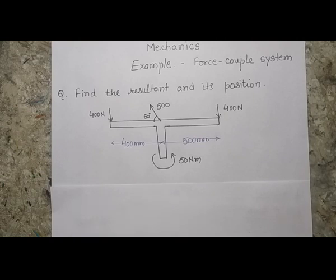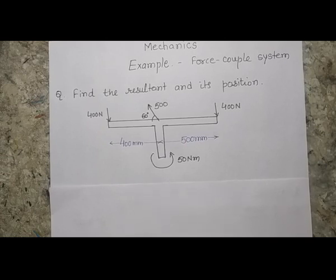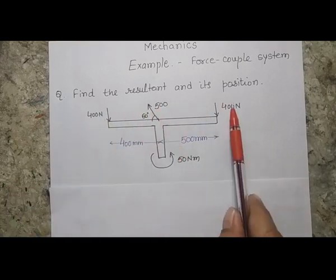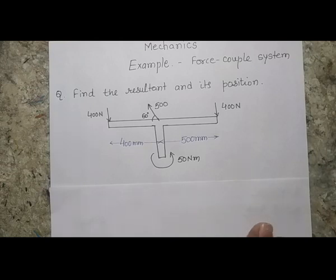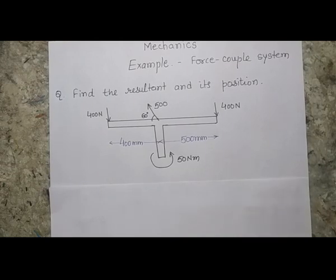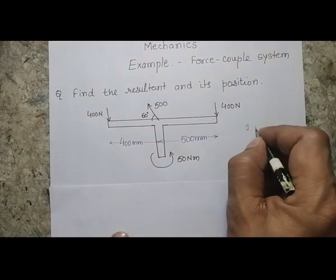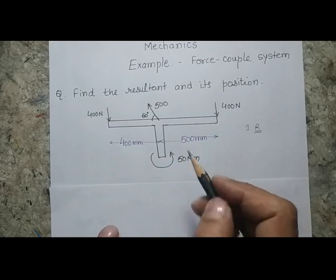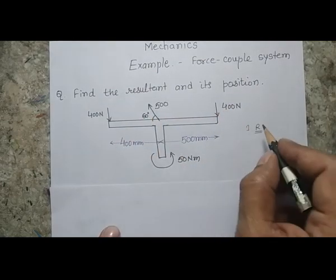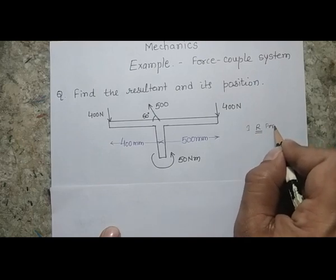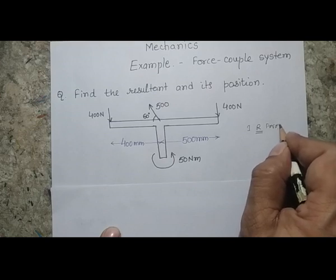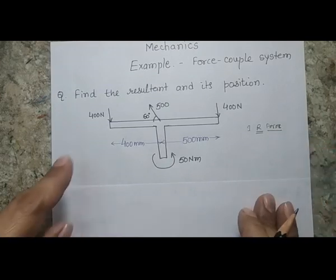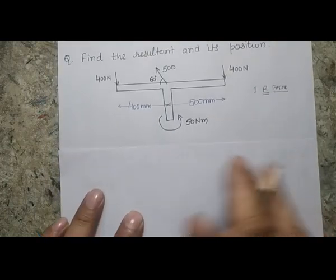I want to find a resultant force which will give the same effect as these multiple forces. We are going to find the resultant force and the position of the resultant force that gives the same effect as the three forces and the moment. The first rule is to find the resultant force of all the forces. There are three forces and one couple acting, but when finding the resultant force, we do NOT consider the effect of the couple — only the forces.